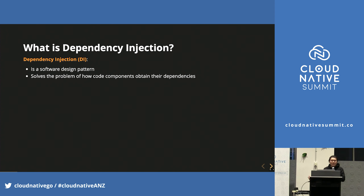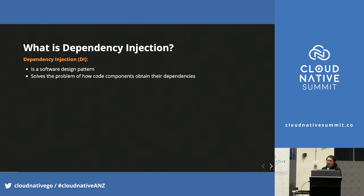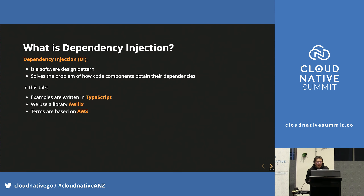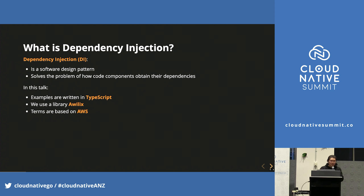So first, what is dependency injection? Dependency injection, or DI for short, is a software design pattern that solves the problem of how code components obtain their dependencies. I'm not a fan of talking about abstract concepts all day, so we will go through code examples to understand stuff in a more practical way.